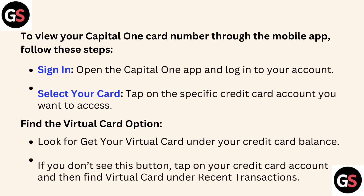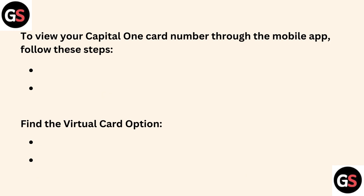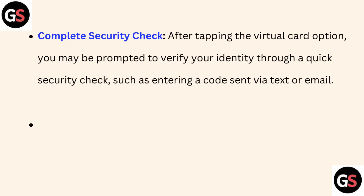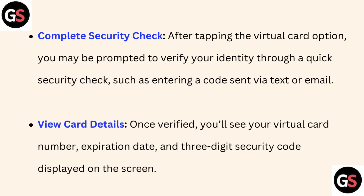Fourth, complete the security check: after tapping the virtual card option, you may be prompted to verify your identity through a quick security check, such as entering a code sent via text or email. Fifth, view card details: once verified, you will see your virtual card number, expiration date, and three-digit security code displayed on the screen.